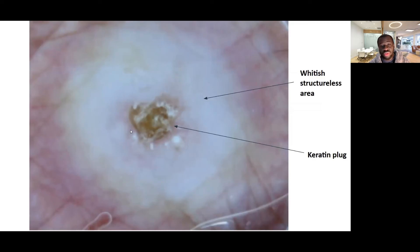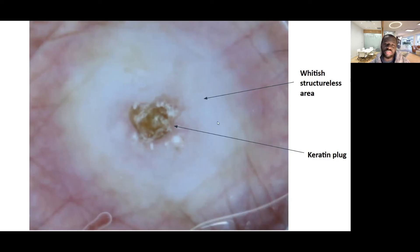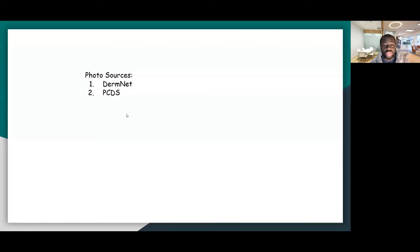This here is a keratin plug — you can see it's a brownish, dark keratin plug. You see the whitish structureless area from destruction of normal skin tissues, replaced with fibrosis, and clearly there is also keratin within there. If you've seen something that looks like this, especially if the lesion is increasing in size, you should be thinking this is likely a squamous cell carcinoma. Sources of this photo: DermNet and Primary Care Dermatology Society.